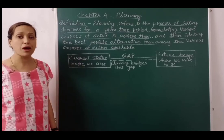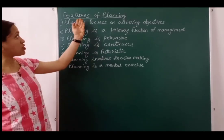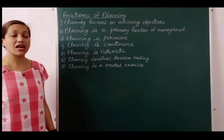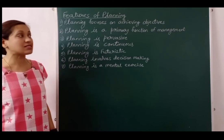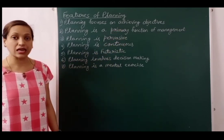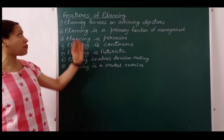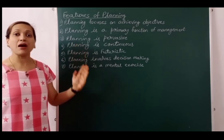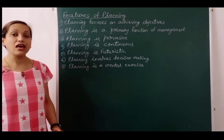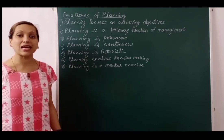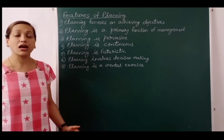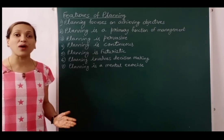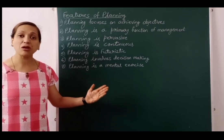Now we see the features of planning. The first feature is: planning focuses on achieving objectives. Whether individual or organization, first they decide their objective, then make planning according to that goal and execute it. This planning helps us reach our target. For example, in schools, teachers first decide when they need to finish the hundred percent course, then make their chapter-wise and month-wise teaching plan.